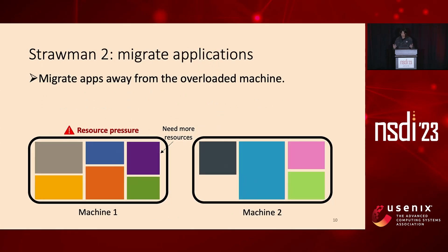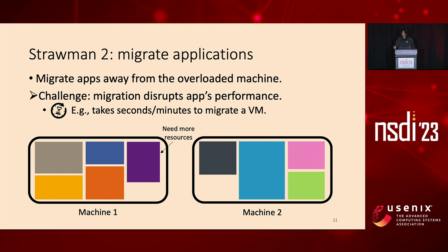Another alternative is to migrate applications away from the overloaded machine to make space — for example, migrating the green application to the right-hand machine. However, this also doesn't work straightforwardly, as migration can seriously disrupt application performance. It usually takes a few seconds or even a few minutes to migrate a VM, meaning the migrated application's performance could be seriously disrupted. This is unacceptable for latency-critical applications, which are common in today's data centers.